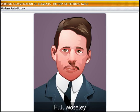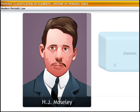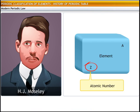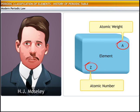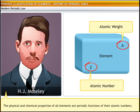H. J. Moseley, an English physicist, built further on the periodic table to resolve the problems encountered in using it. He discovered that atomic number is a better basis for classifying elements than atomic weight. On the basis of his work, he developed the modern periodic law, which states that the physical and chemical properties of all elements are periodic functions of their atomic numbers. The modern periodic law has become the universally accepted form of classification of elements, as it does not suffer from the demerits of Mendeleev's periodic table.